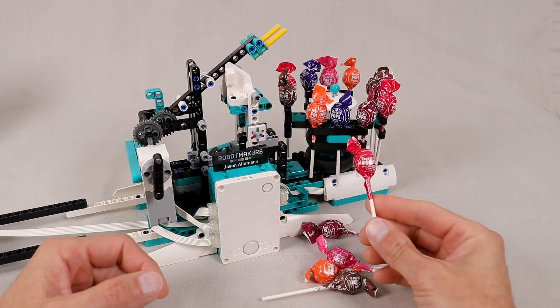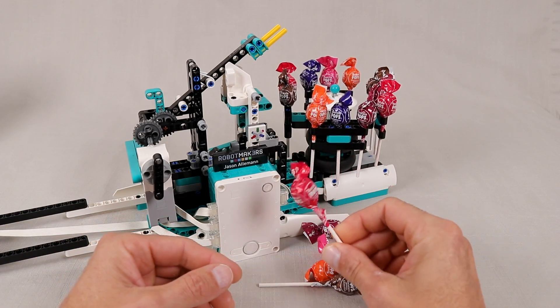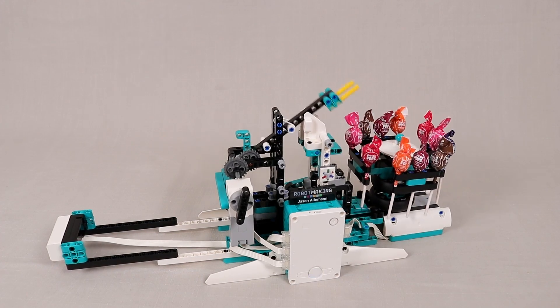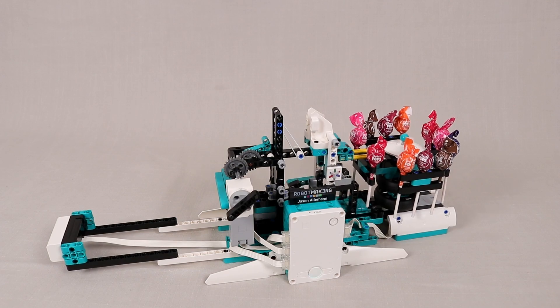Halloween is fast approaching and for this year's candy machine I decided to tackle these mini lollipops. I ended up building this catapult-style robot to help deliver them to the kids that come to our door.